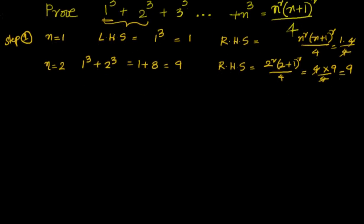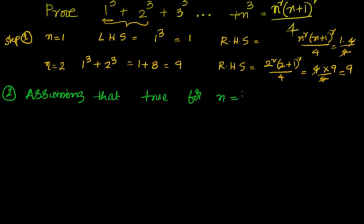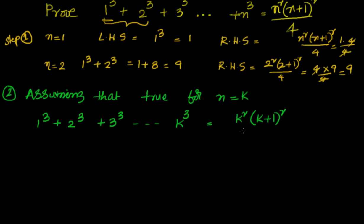Now let us move to Step 2. We assume that the statement is true for n=k. So the left-hand side 1³ + 2³ + 3³ + ... + k³ equals k²(k+1)²/4. This is the inductive hypothesis.